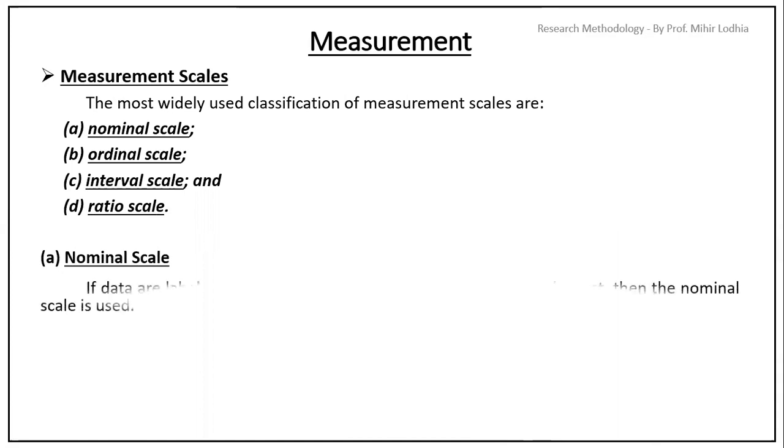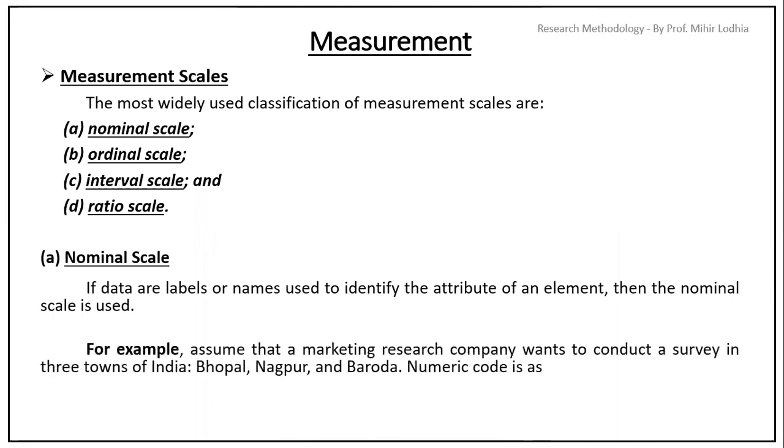Nominal scale. If data are labels or names used to identify the attribute of an element, then the nominal scale is used. For example, assume that marketing research company wants to conduct a survey in three towns of India, Bhopal, Nagpur and Baroda.